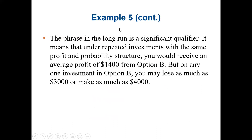The phrase 'in the long run' is a significant qualifier. It means that on repeated investment with the same profit and probability structure, you will receive an average profit of $1,400 from option B. But on any single investment in option B, you may lose as much as $3,000 or make as much as $4,000.